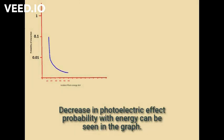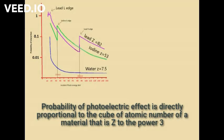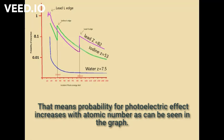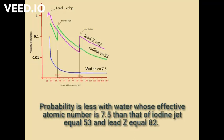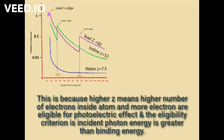The decrease in photoelectric effect probability with energy can be seen in the graph. Probability of photoelectric effect is directly proportional to the cube of the atomic number Z of the material, that is Z to the power 3. That means probability for the photoelectric effect increases with atomic number. As seen in the graph, probability is less for water, whose effective atomic number is 7.5, than for iodine (Z = 53) and lead (Z = 82). This is because a higher Z means a higher number of electrons inside the atom, and more electrons are eligible for the photoelectric effect.